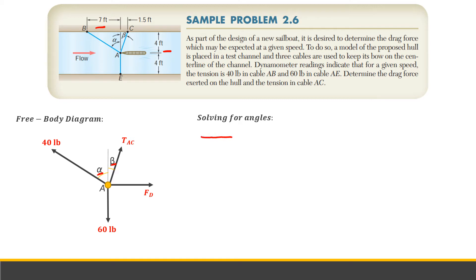First we will solve for the angles, alpha and beta. We have given dimensions, so we can solve for alpha and beta using these dimensions. Starting with alpha, we have this is 7 feet and this is 4 feet. Using the trigonometric properties of a triangle, we can solve that tangent alpha equals opposite which is 7 feet over the adjacent which is 4 feet. Alpha is then equals to 60.26 degrees.